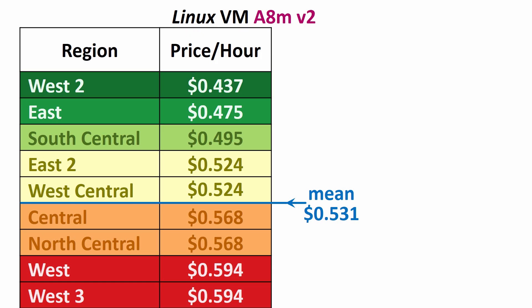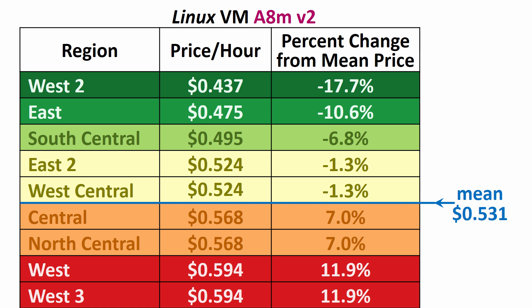The next VM type I'll use as an example is A8M V2. Here's the hourly rate for this VM in each region, arranged from lowest to highest price, along with the arithmetic mean. And here's the percentage change of each region's price from the mean. East 2 and West Central are very close to the mean, so I'll use them as a baseline and ask the question: what would $100,000 of usage in these two regions cost in the other seven regions?